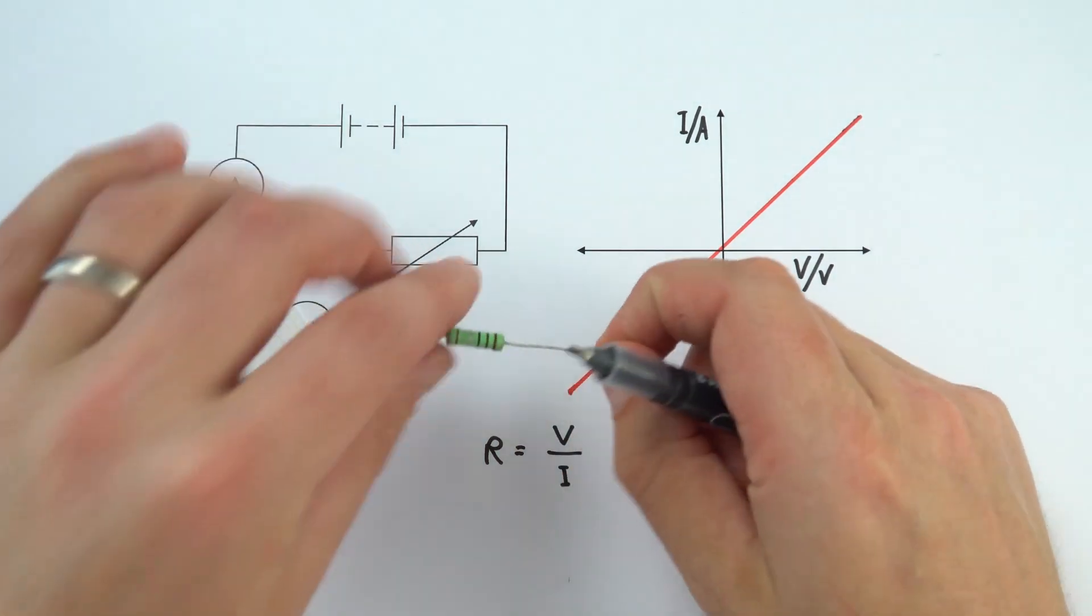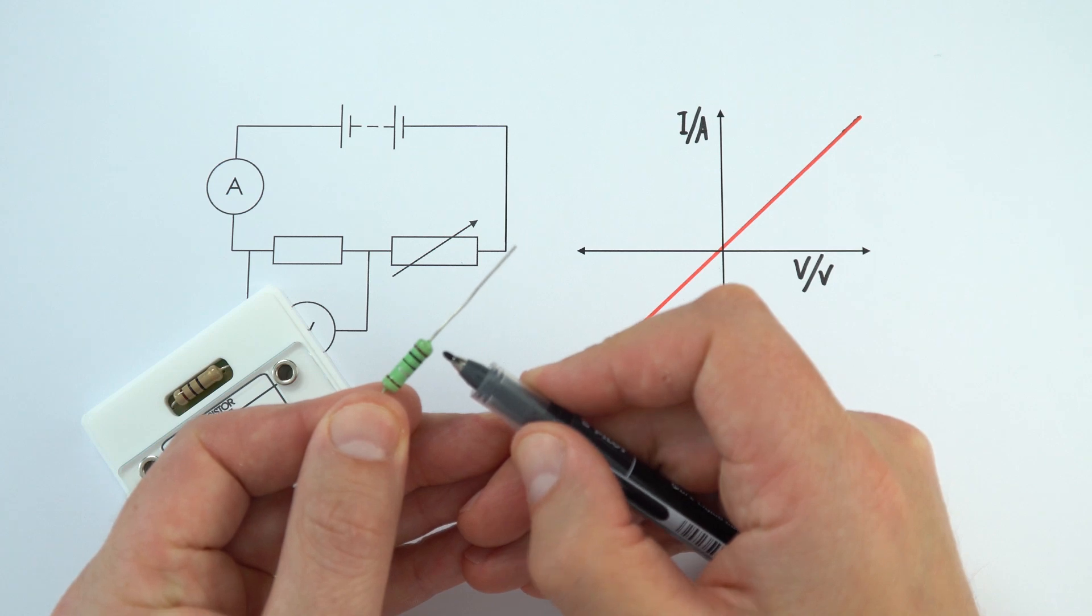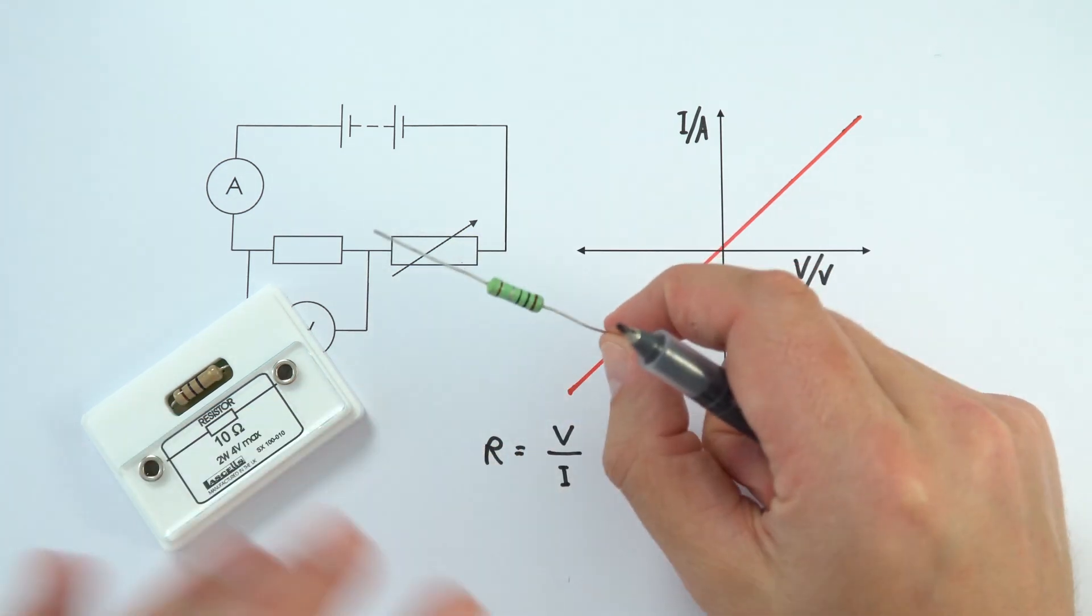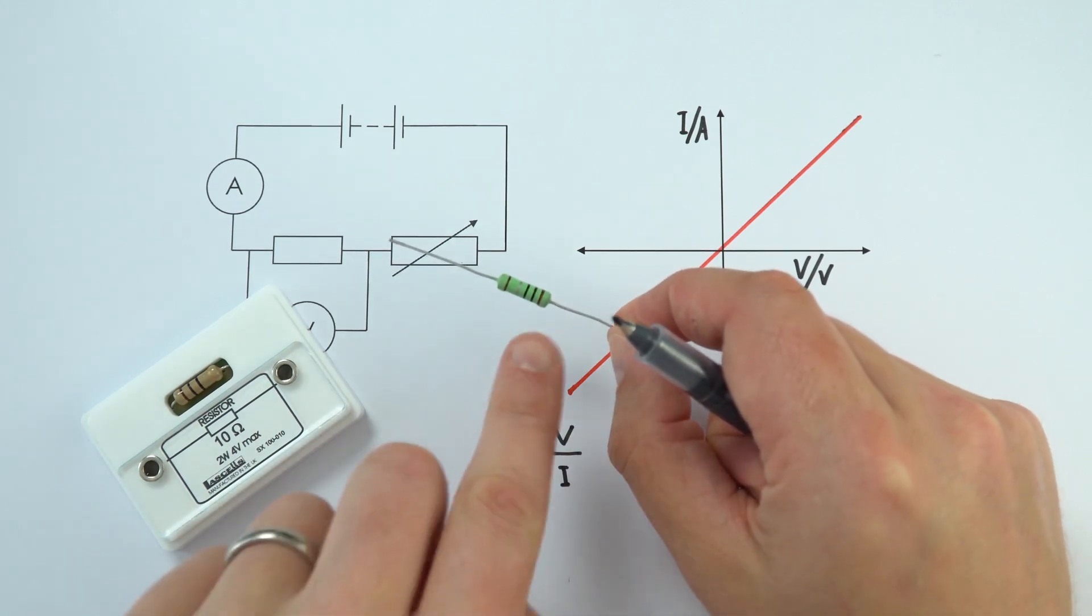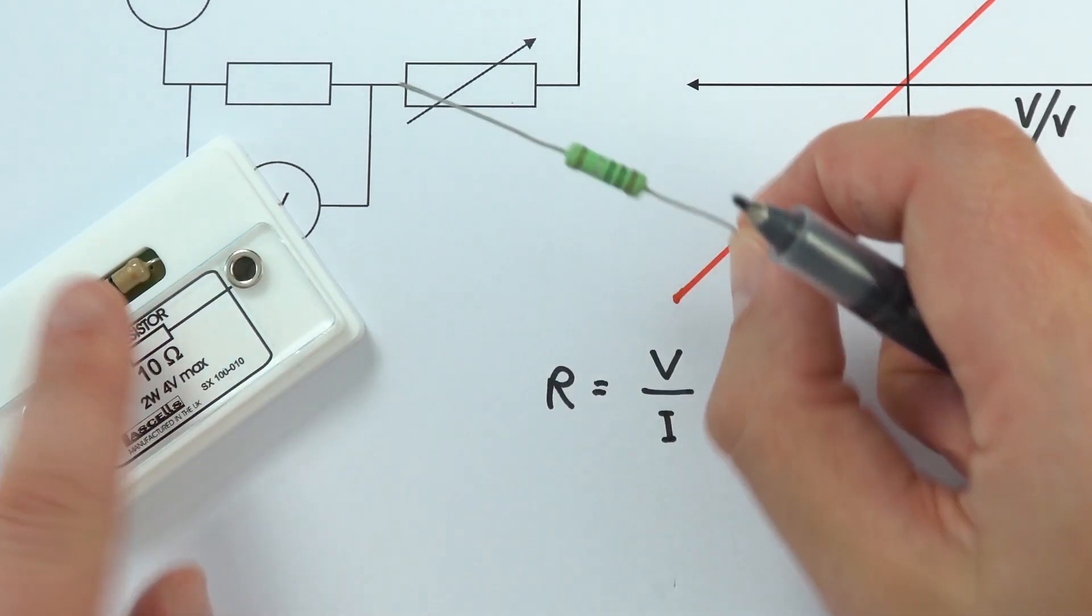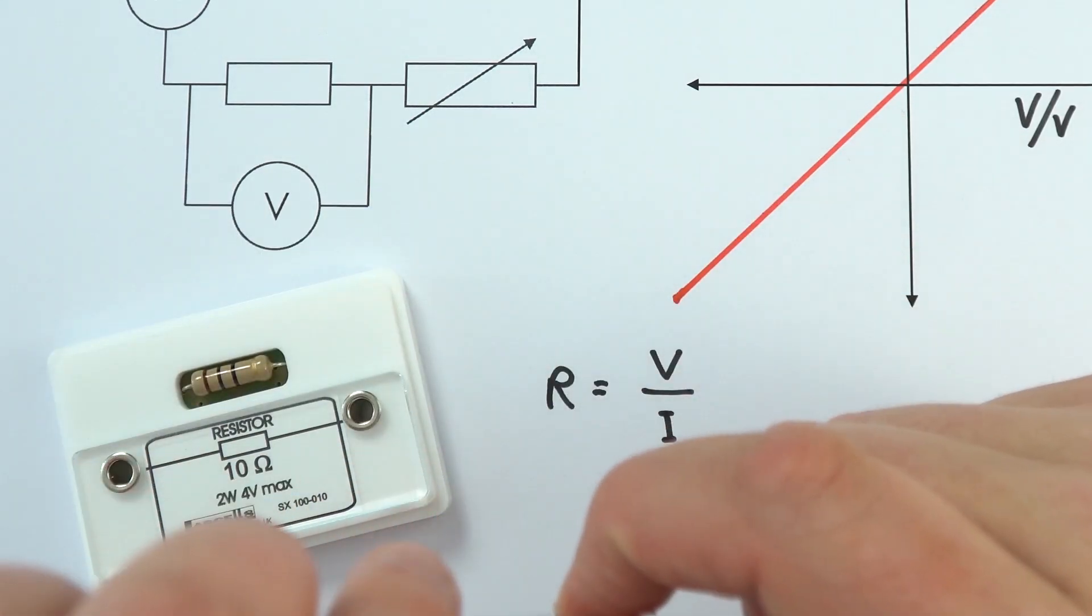There's a certain number of colored bands on the side of each resistor. These form a special code that tells us the resistance of that resistor. This one has a different sequence of bands than this other fixed resistor over here.